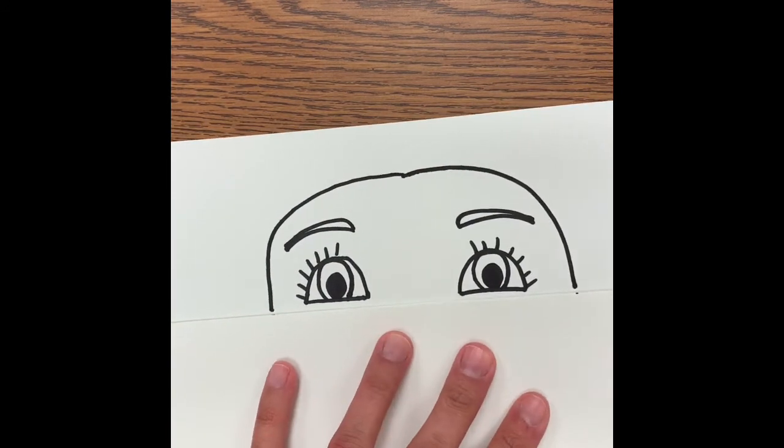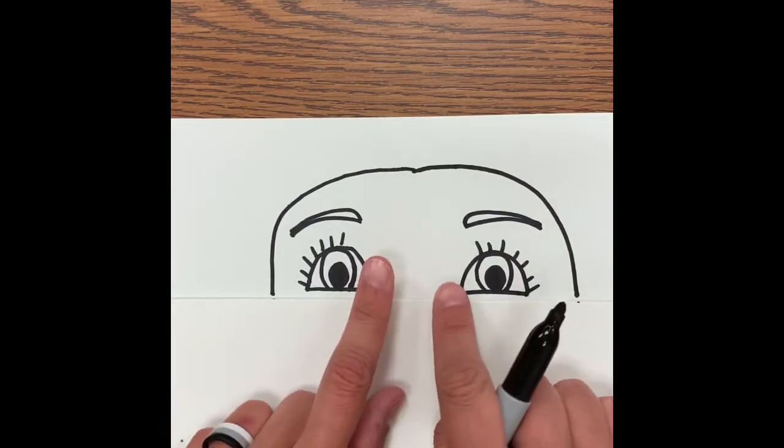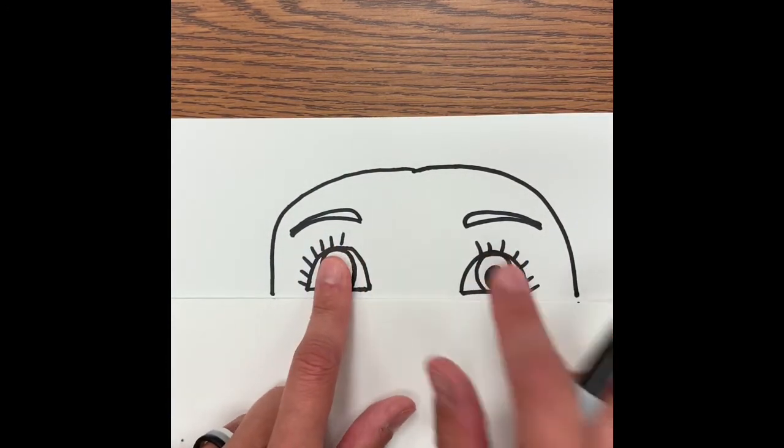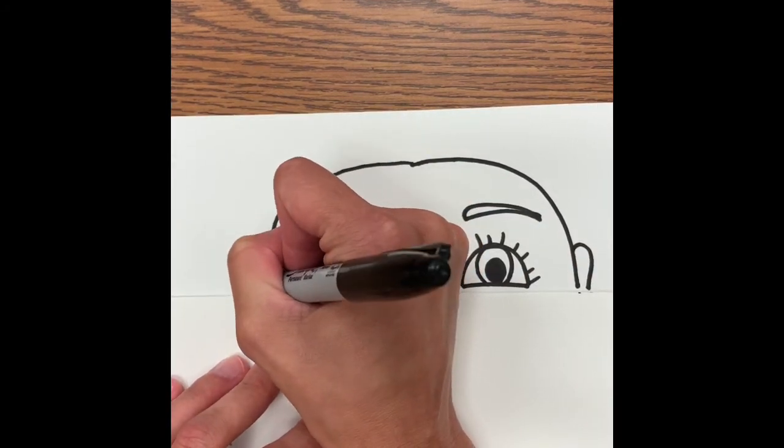My next step is I'm going to add my ears. So your ears are going to be lined up with about where your eyes are, the top of your ears. I'm going to go ahead and go like this on this side, same thing on the other side.